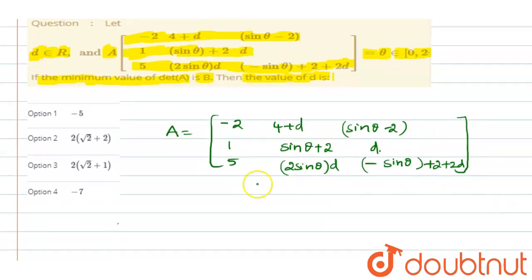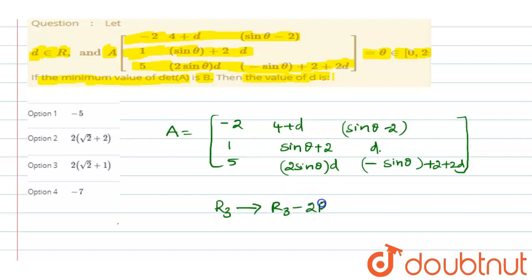So the next step: we apply the row operation R3 implies R3 minus 2R2 plus R1.